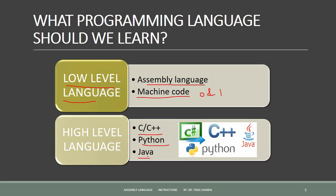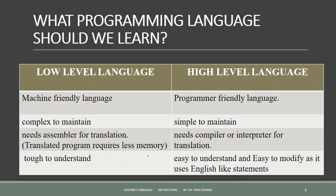The main difference between high-level and low-level languages is that programmers can easily understand, learn, and interpret high-level languages in comparison to low-level languages. High-level languages are written in a form that is close to human language, which enables programmers to focus on the problem being solved.